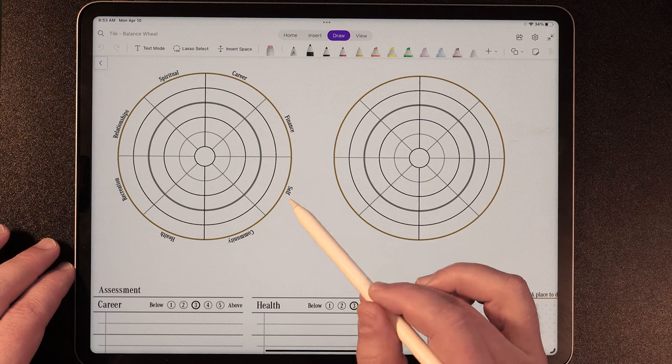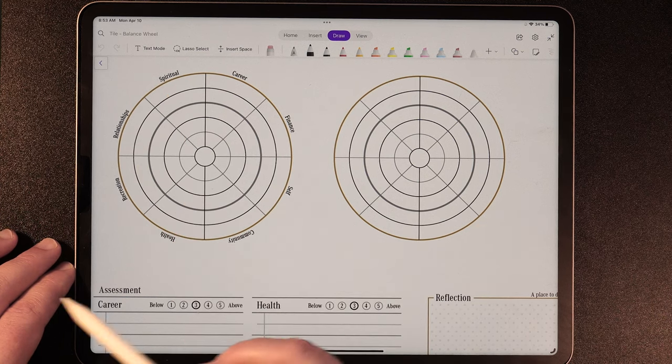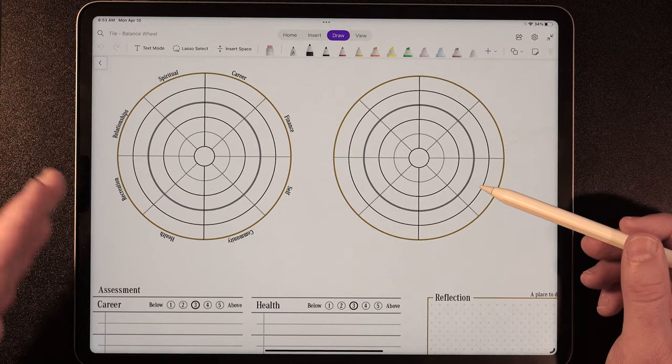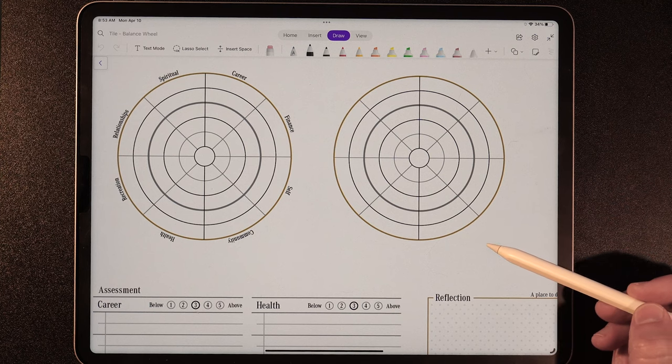So let's jump into the tiles that we've included in this. If we go into backgrounds here, we're going to see that we gave you a tile that's already pre-set up with career, finance, self, community, health, recreation, relationship, and spiritual. And then we gave you a blank one that you can be able to personalize.